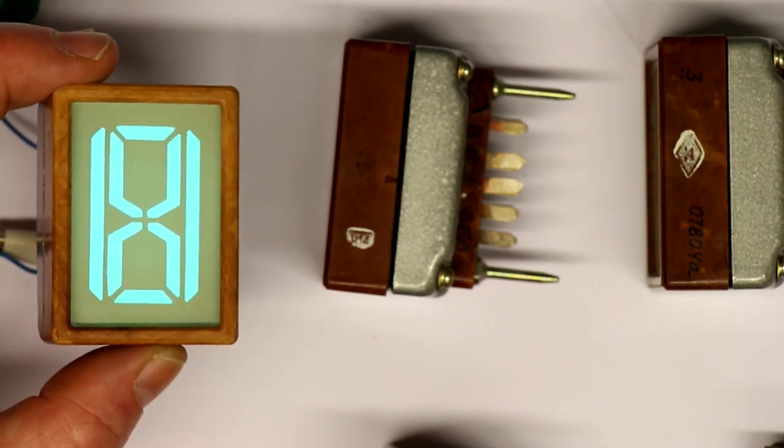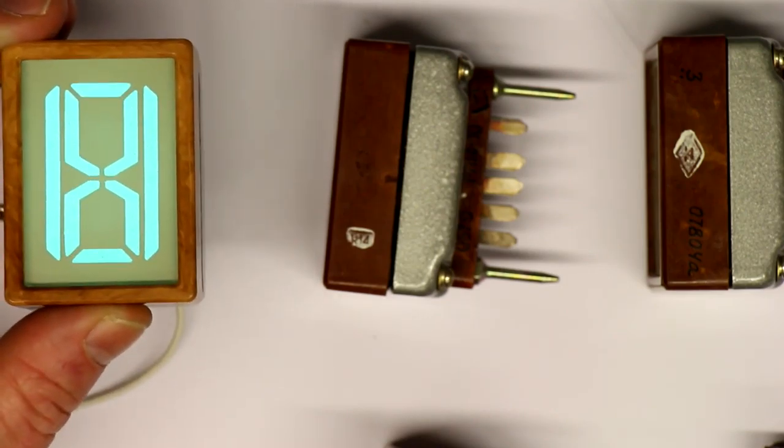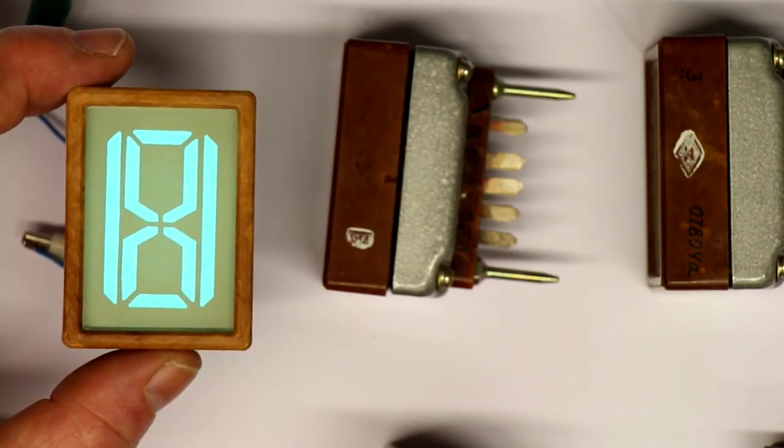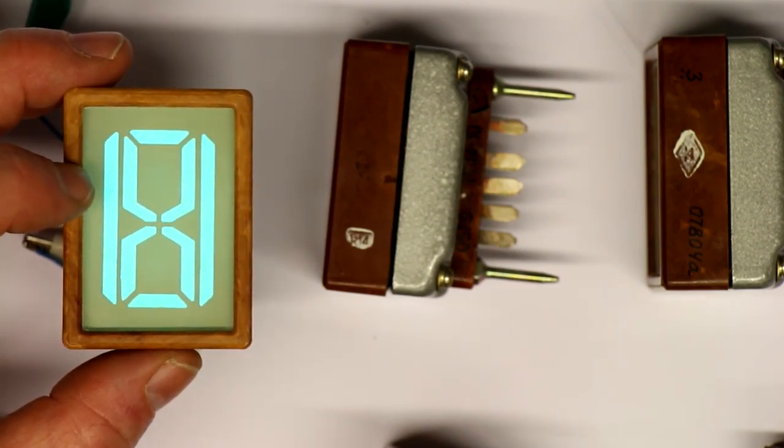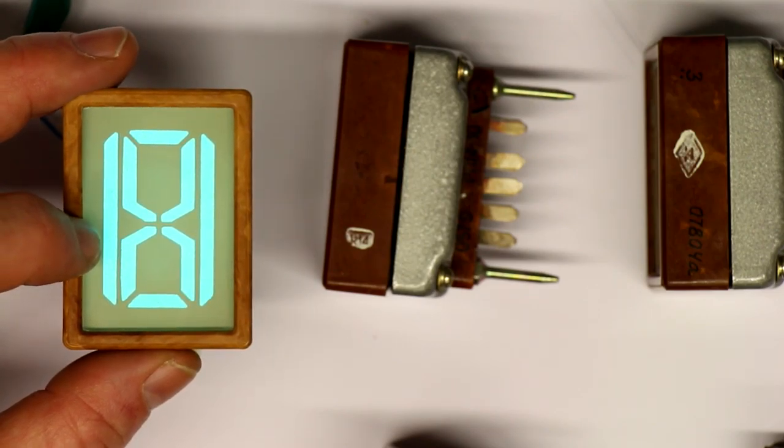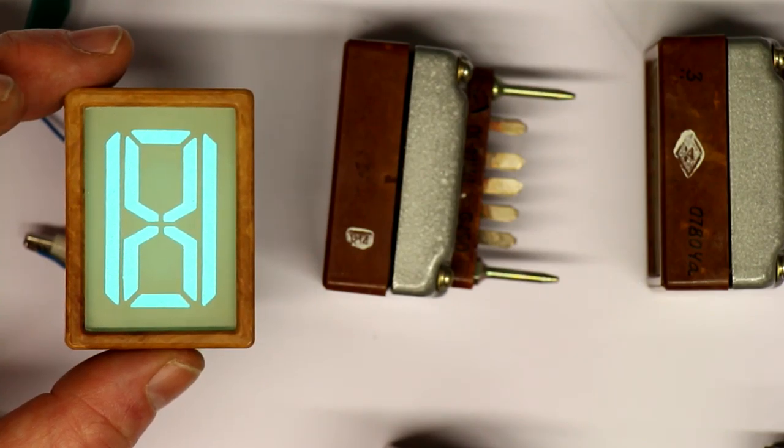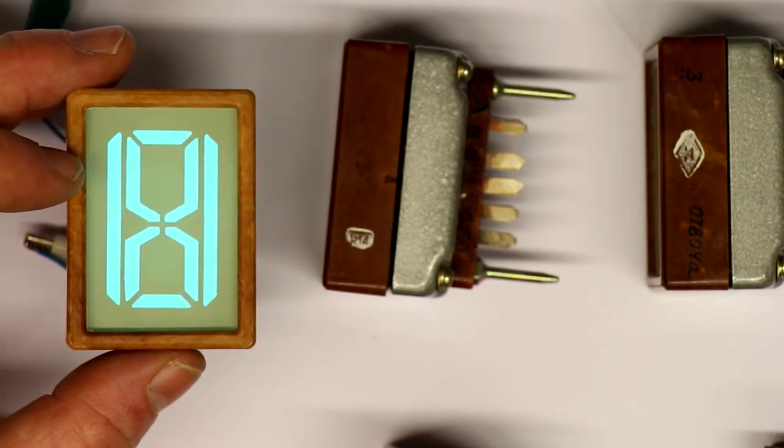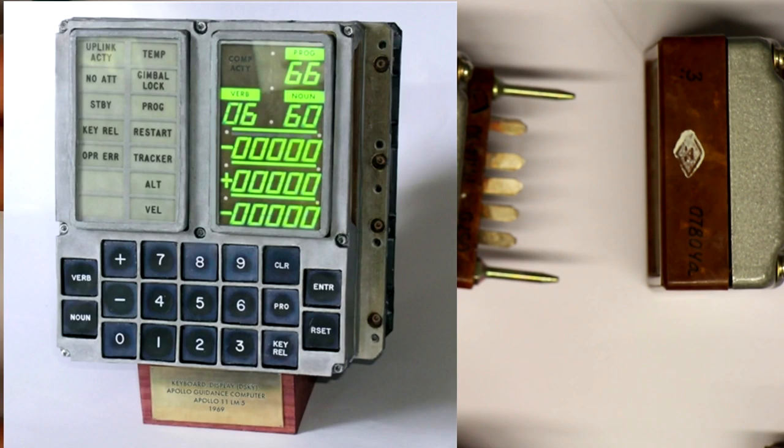Why is this in my video series about vintage display technology? Not only because this is vintage Russian technology, but electroluminescent displays are one of the oldest technologies to display numbers and letters. The most famous use that was made of electroluminescent display is the famous AGC, the Apollo guidance computer which was in the lunar module and command module and which took us to the moon and back.